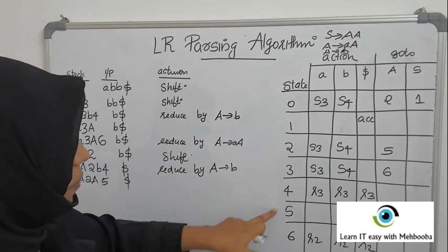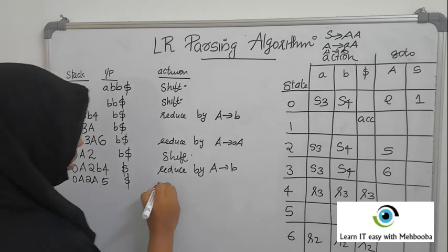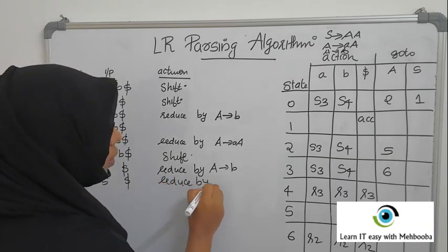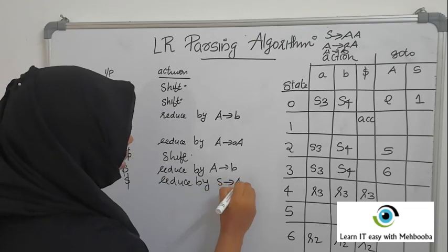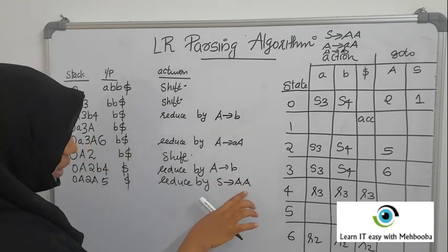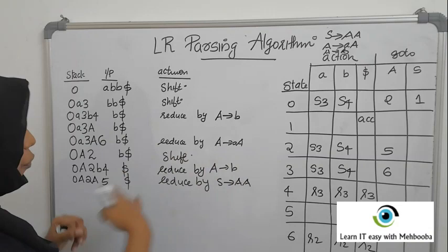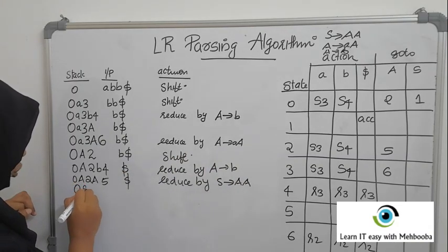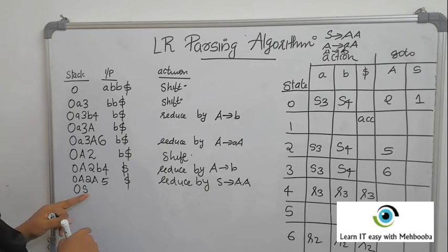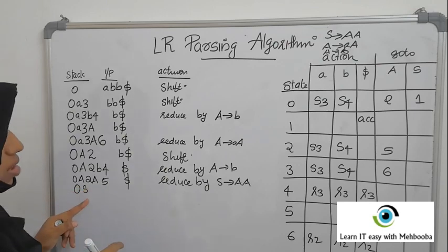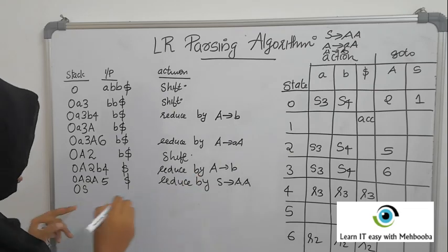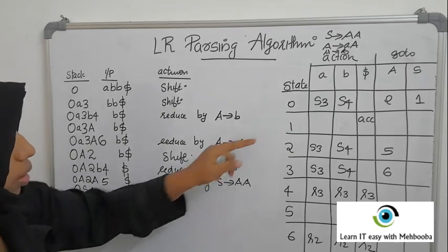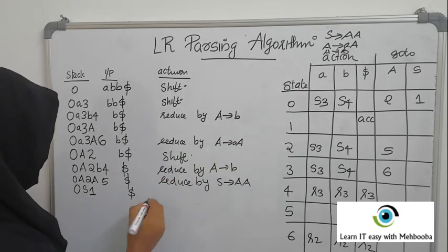Now check 5$ — it is R1, reduce by production 1: S→AA. There are 2 symbols on the right-hand side, so 4 symbols are popped off the stack. Push the left-hand side S onto the stack. State 0 is now on top, apply GOTO on 0S which gives 1, so push 1.